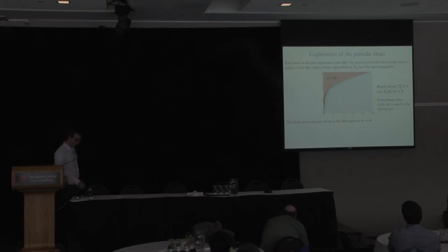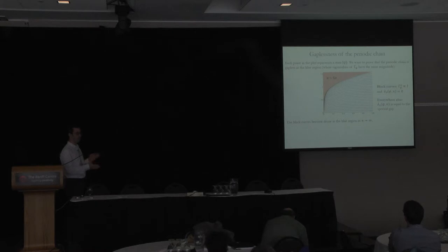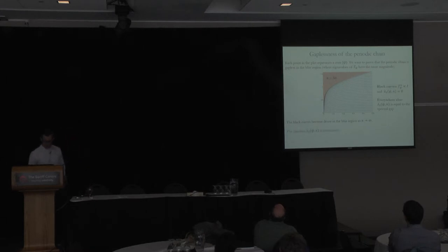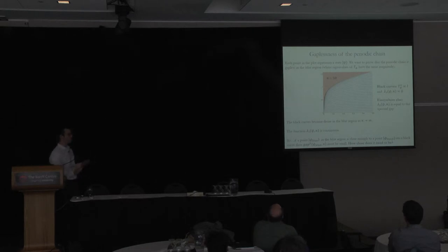We have a function defined in this two-parameter space. The function takes the value zero on each of these black curves, which are becoming dense. Everywhere else, the function is the spectral gap, and we want to show the spectral gap is going to zero if you're sitting in this blue region. If you're close enough to a black curve, then the spectral gap should be close to zero, because on the black curve this function takes the value zero. The logic is that the function is continuous; it takes the value zero on the black curves and equals the spectral gap everywhere else. So to evaluate how close it needs to be, we need to look at the derivative of this function as a function of psi.